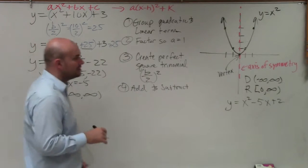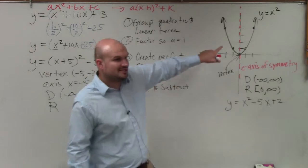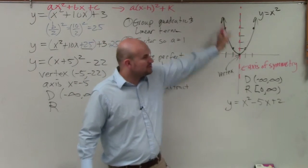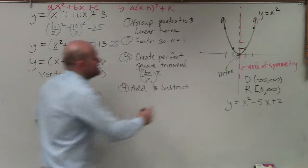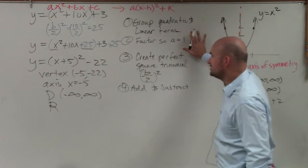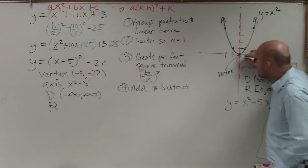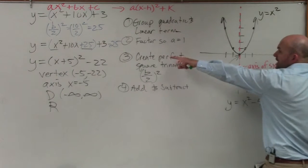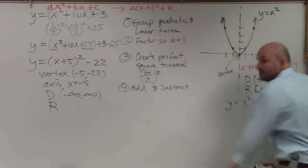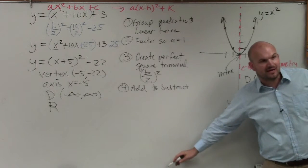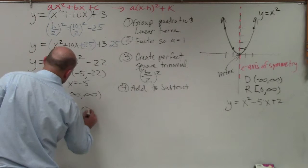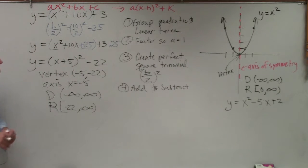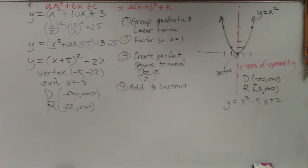Now my range, if you guys look at this graph, my range goes from 0 to infinity. But now what has happened? My vertex has now moved this graph five units to the left because the vertex was at 0, 0. Now the vertex has been moved five units to the left and down 22. So what's the lowest that the graph goes down to now? Negative 22. So the range is now negative 22 comma infinity. And that's basically the hardest part that you guys will have to do.